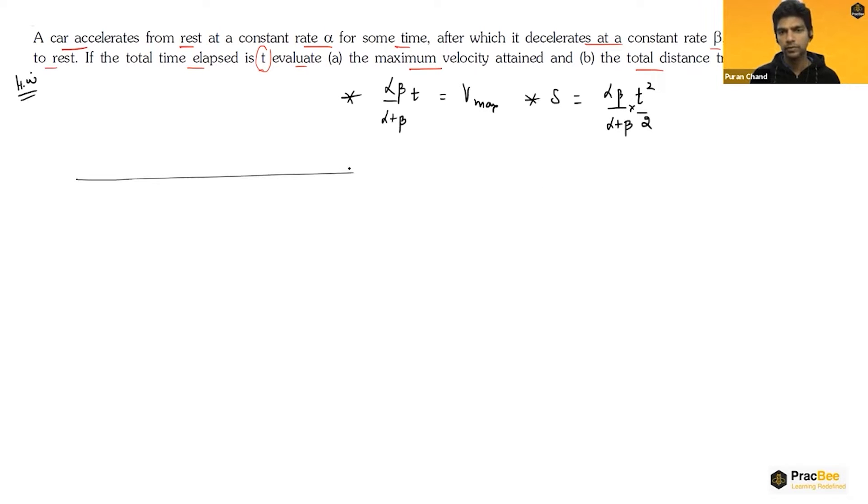Let me solve this. So we have velocity and time. First, the car is accelerating, so it will be a straight line. Here the acceleration is alpha, and then it will decelerate with beta and comes to rest. At the initial position and at the final, the velocity is zero. At the peak of this triangle, the height gives you the maximum velocity.